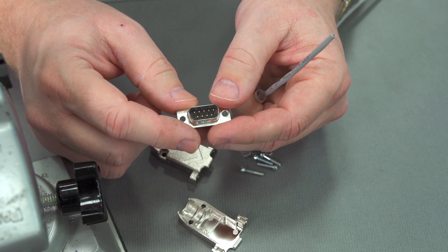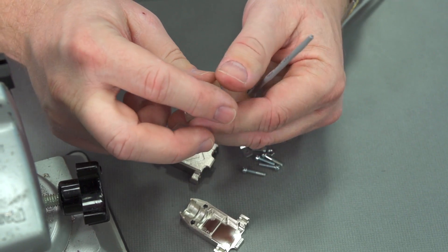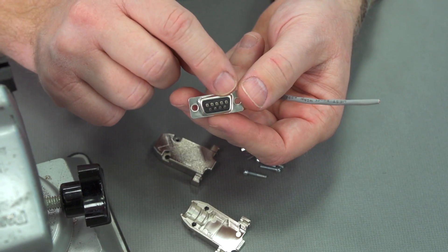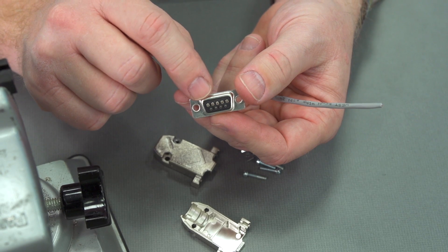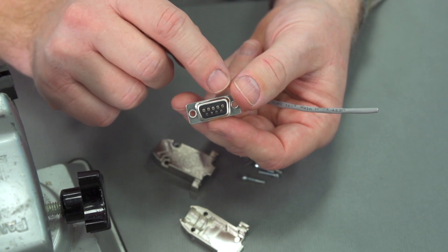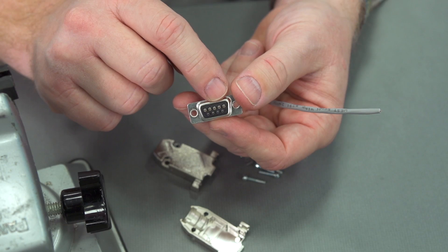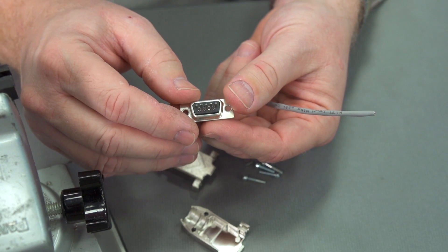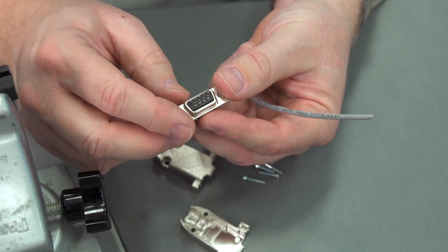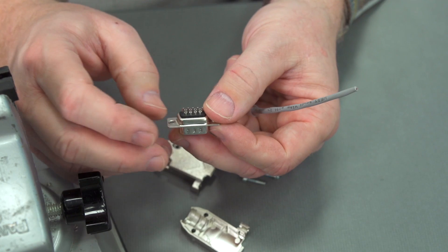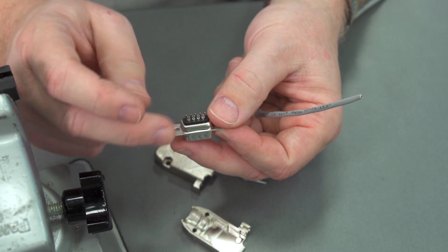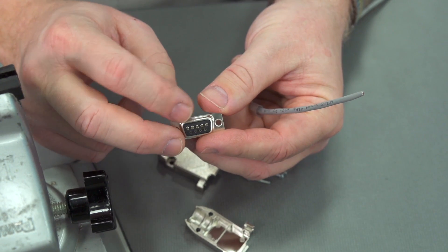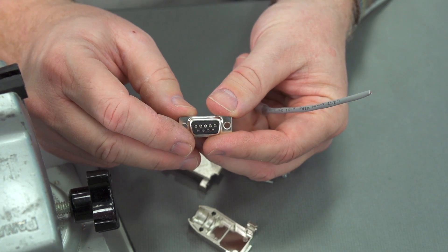As I go to flip this over, pin 1 is now here, and pin 5 is here. So I know my shield connection is going to go there, so 2 is going to be there, that's going to be my transmit. You can see the way the solder cups are. If I were doing pins 7 and 8 for CTS, RTS, those would go here on the bottom, but I'm only doing 2, 3, and 5, so we're going to work on the connectors here at the top.